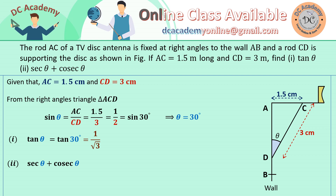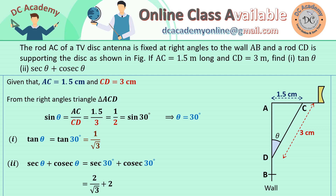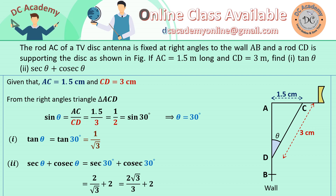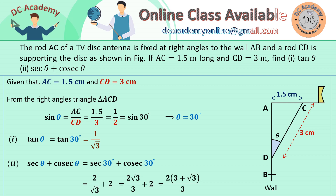Now let's calculate sec theta plus cosec theta, which is sec 30° plus cosec 30°. We know sec 30° is 2 by root 3 and cosec 30° is 2. Adding them together gives 2√3/3 plus 2. We multiply the numerator and denominator of the first term to rationalize it, then add to get the final value of sec theta plus cosec theta. Hope you understood the problem.